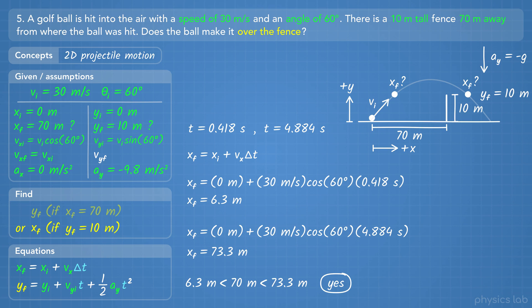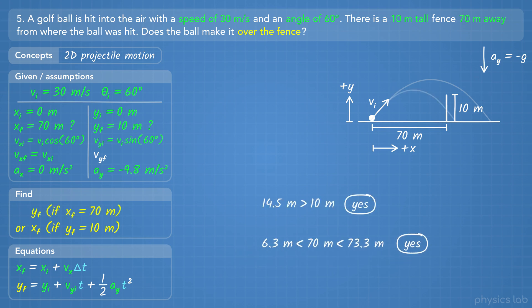Solving it the other way might be easier to think about, but either way works. Now let's check our answer. We got the same result solving it two different ways, so it's probably right. We could plug the final x positions and the final y position from the other method back into the equations to check if the equations are true. Another thing we can do, if we have enough time and really want to be sure we got it right, is to walk through the problem a second time to see if we get the same values again, and check that we didn't make any mistakes with the math.